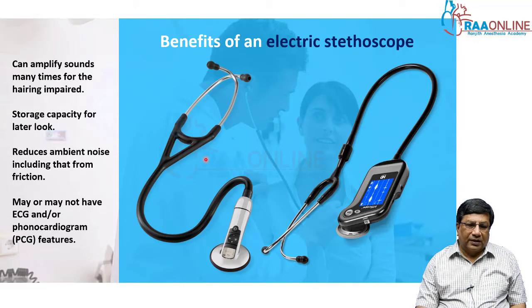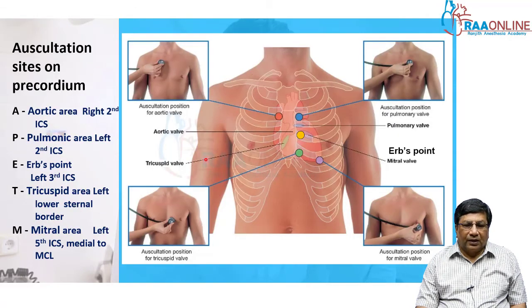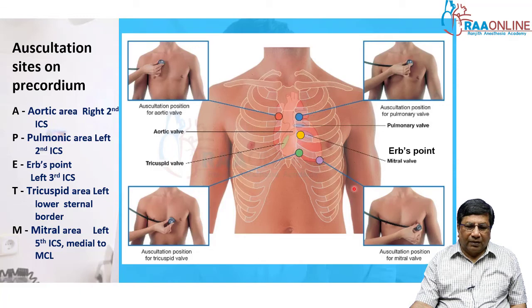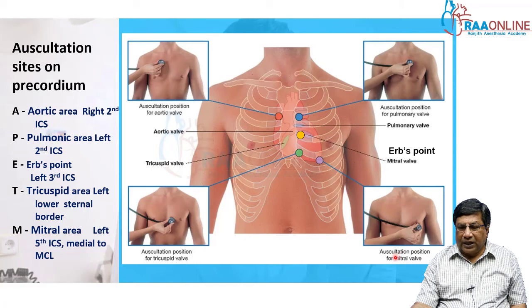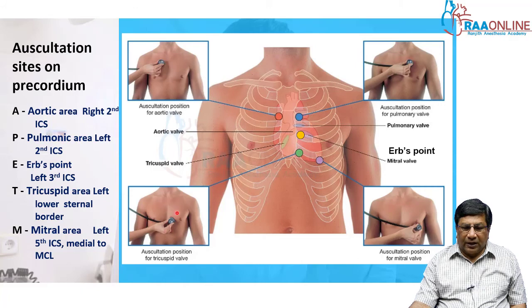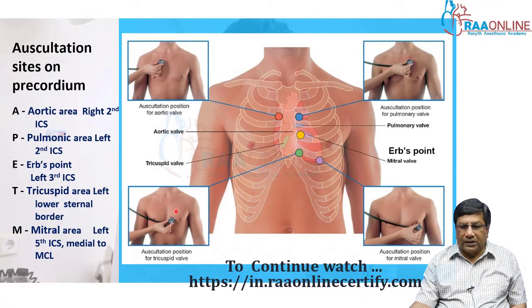There are many advances in stethoscopes, but we still rely on the old conventional stethoscope. The auscultatory areas are primarily five. One is the mitral area, where you listen for the first, second, third, and fourth heart sounds, and mitral events like mitral regurgitation or mitral stenosis. Then there is the lower left sternal edge at the fourth left intercostal space, called the tricuspid area, which is primarily used to detect tricuspid murmurs as well as murmurs of ventricular septal defect.